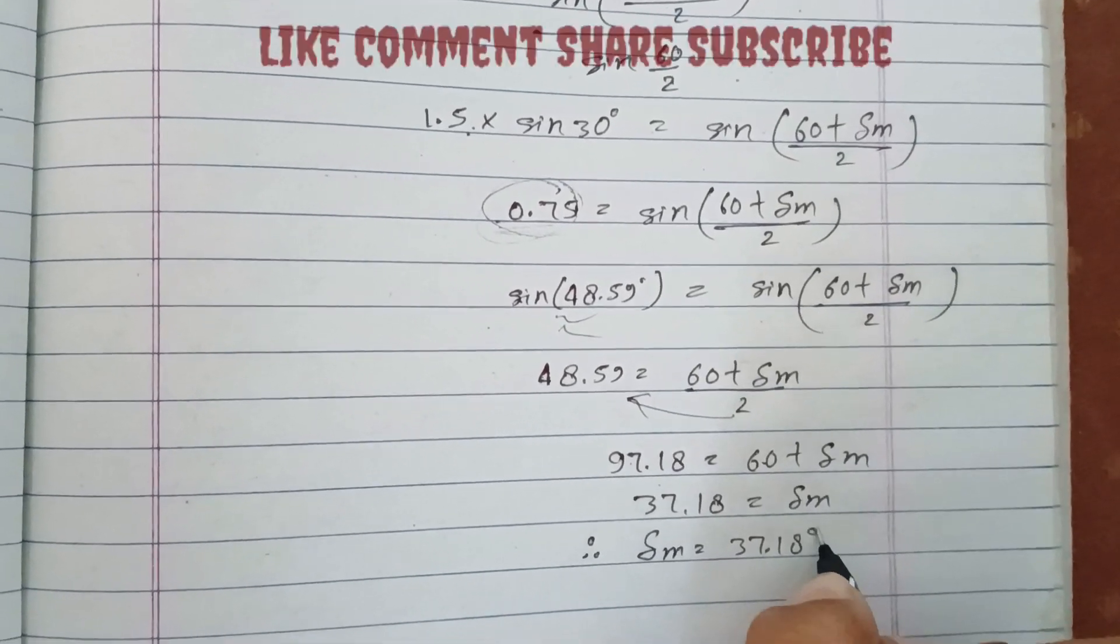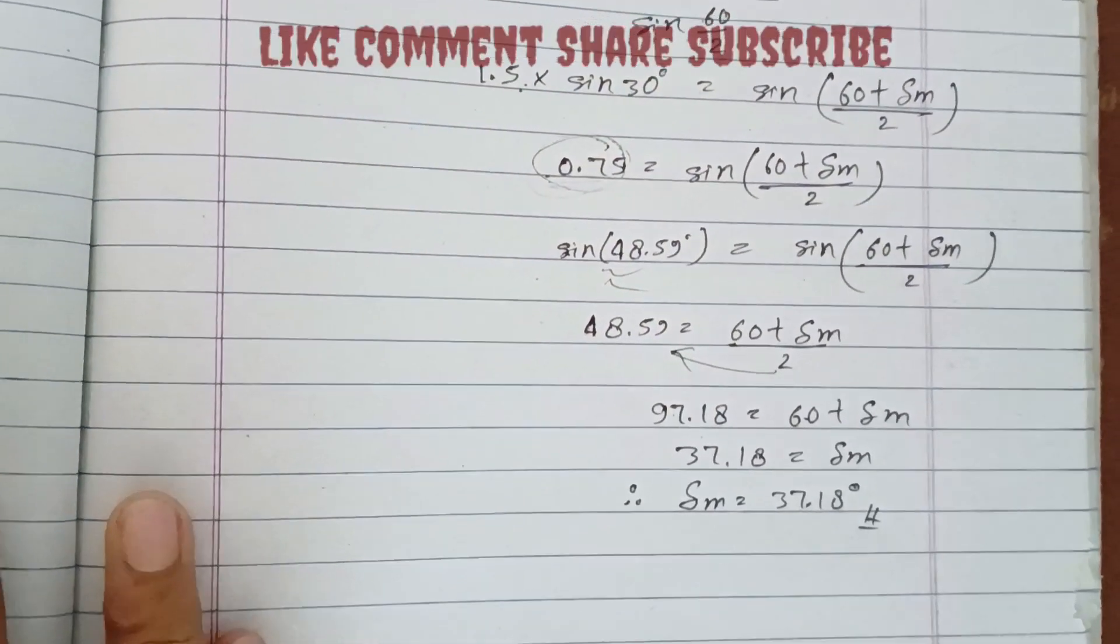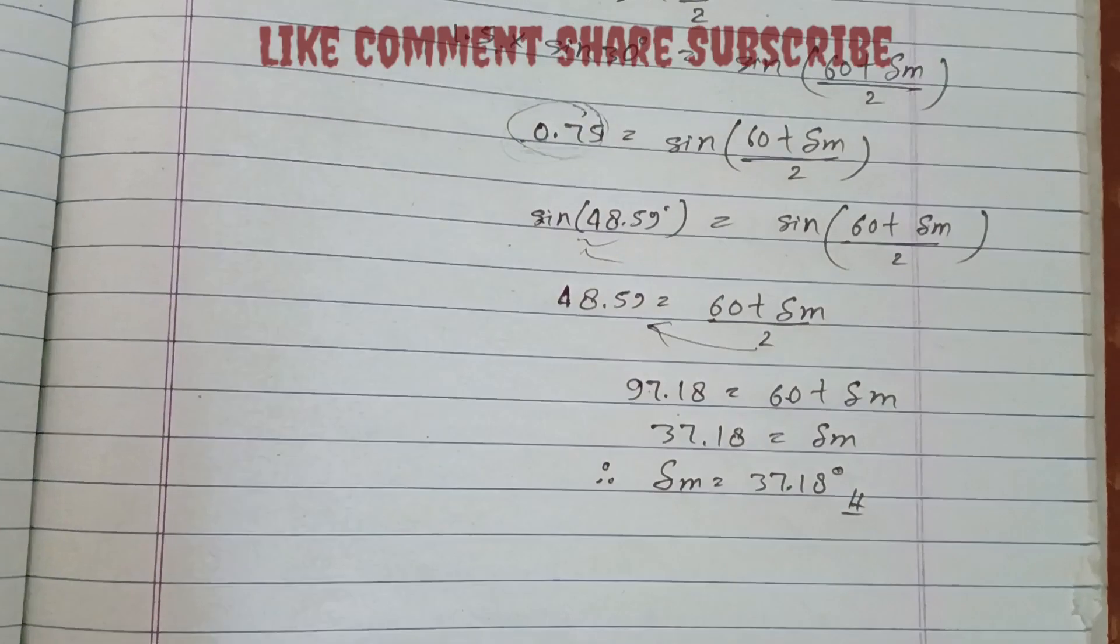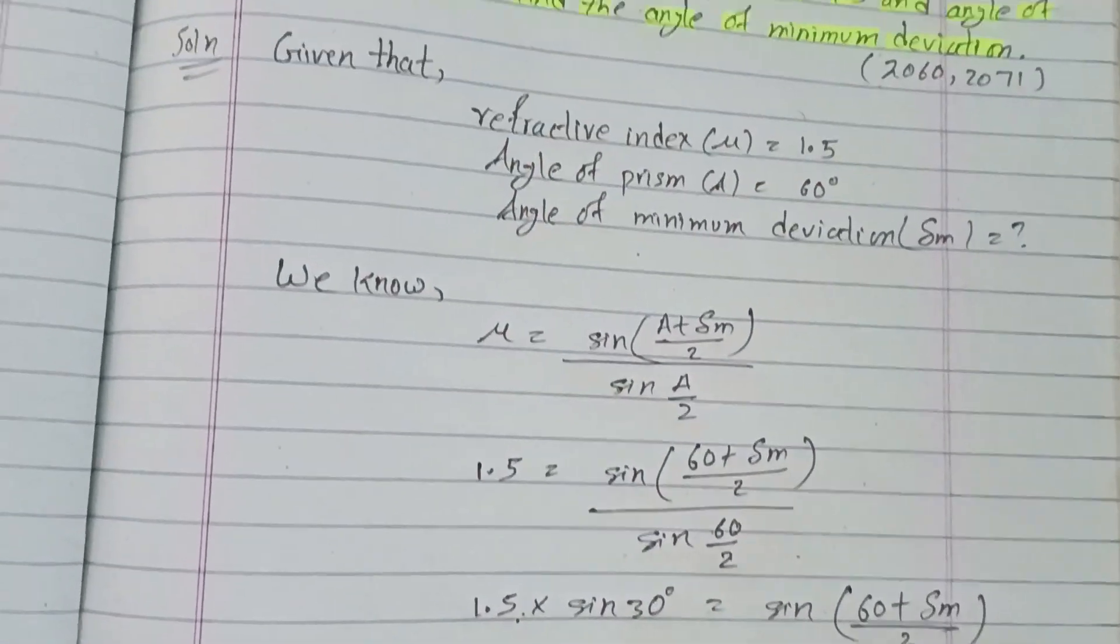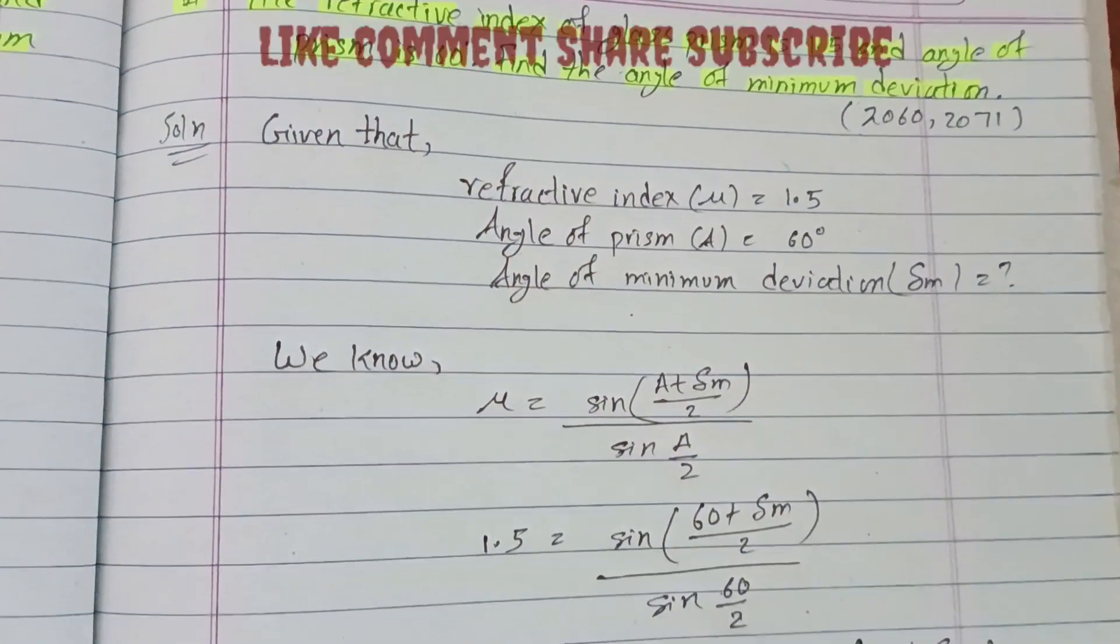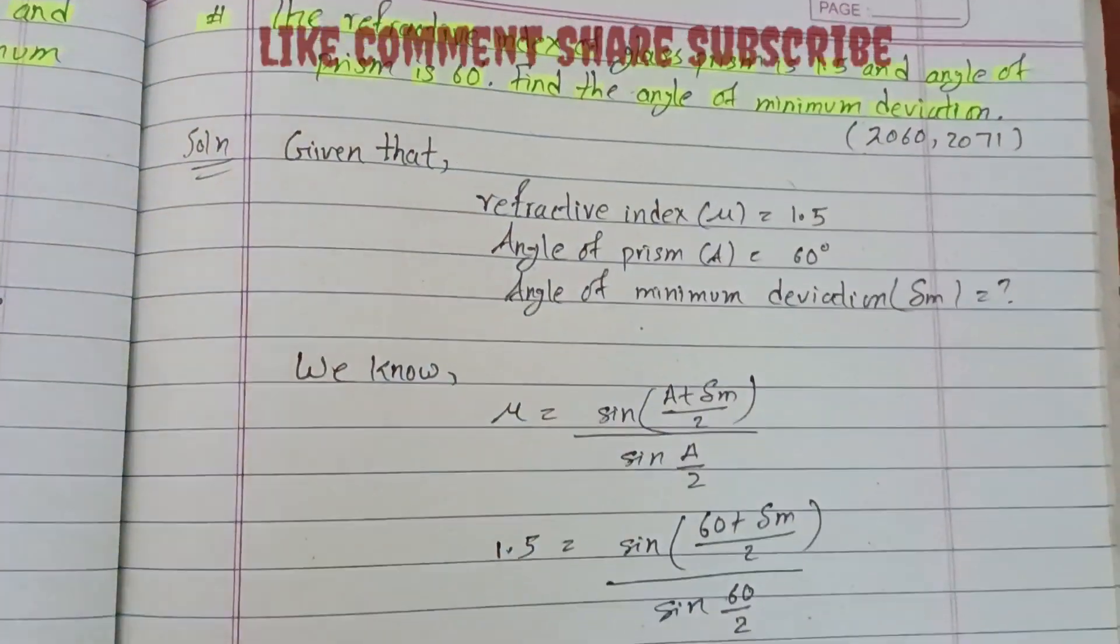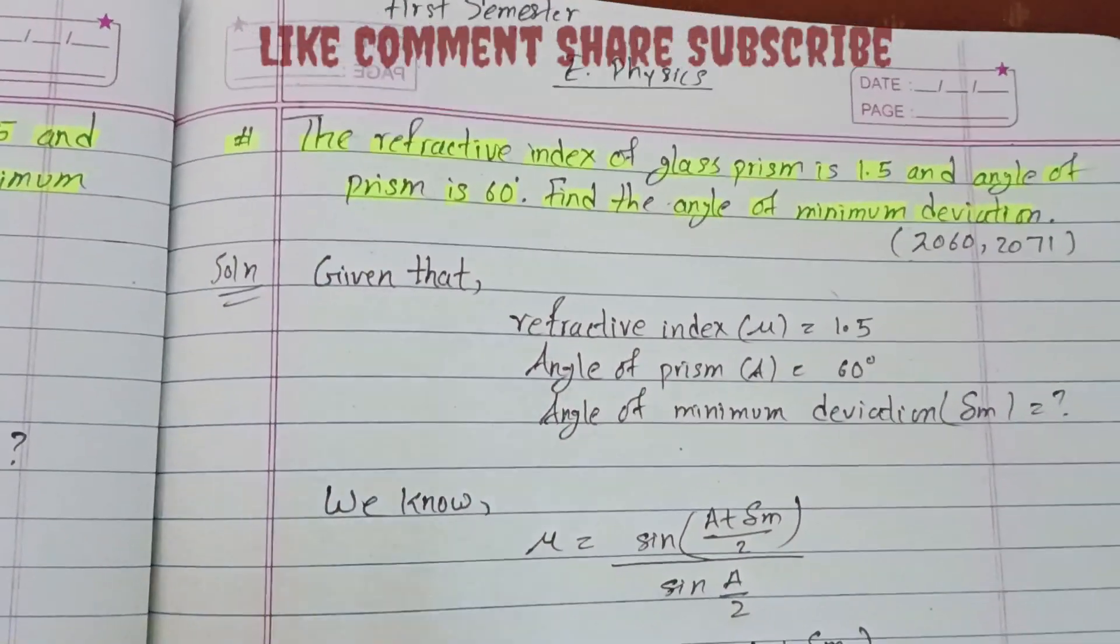So the minimum deviation angle is 37.18 degrees. This is the solution to the question.